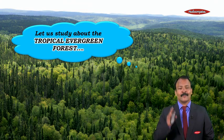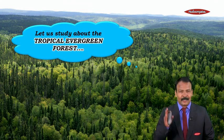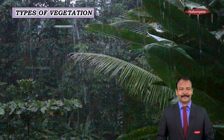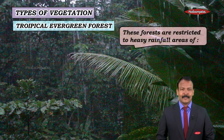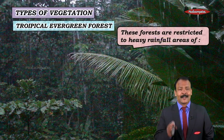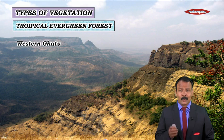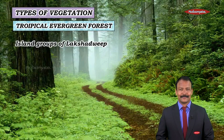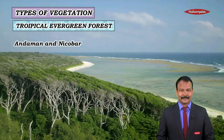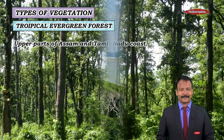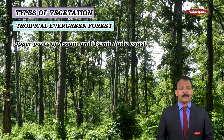Now let us study about the first one, that is tropical evergreen forests. These forests are restricted to heavy rainfall areas in India such as the Western Ghats, island groups of Lakshadweep, Andaman and Nicobar, upper parts of Assam and Tamil Nadu coast.